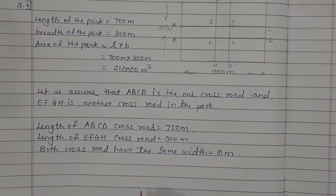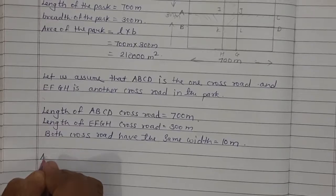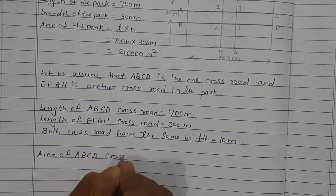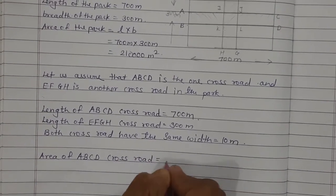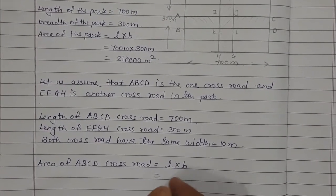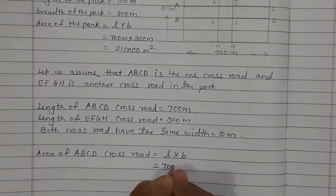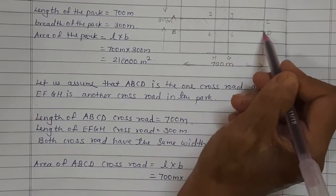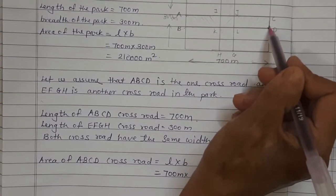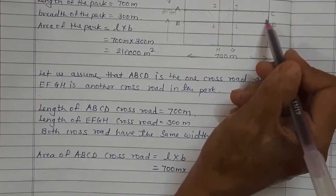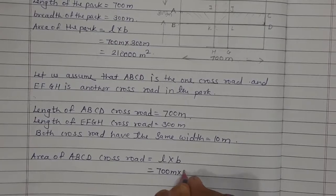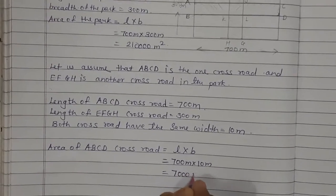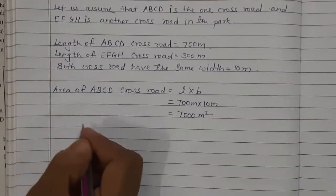So let's find the area of ABCD cross road. Formula is length multiplied by breadth. Length is 700 meter and breadth is 10 meter — this is the width of the cross road. So area of ABCD cross road is 700 into 10 = 7,000 meter square.